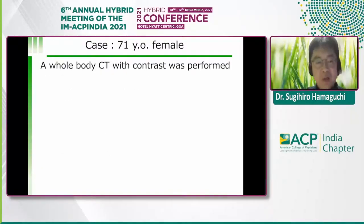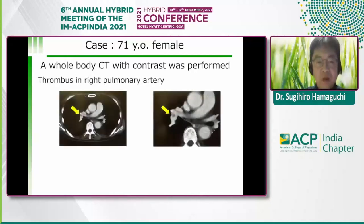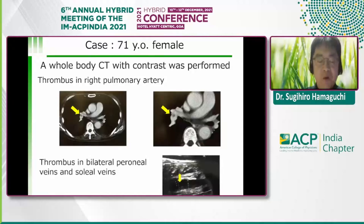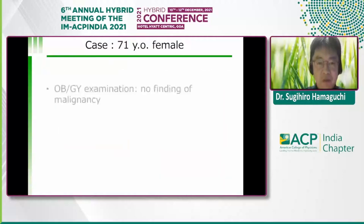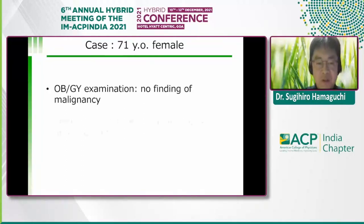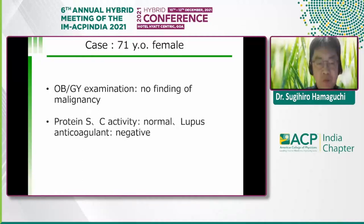We performed a whole-body CT with contrast material and found a thrombus in the right pulmonary artery. We also checked lower extremity veins and found thrombus in bilateral peroneal veins and soleal veins. Concerned that the patient might have cancer elsewhere, we consulted OB/GYN, but they found no malignancy in the uterus or ovaries. There were no hypercoagulable causes such as reduced protein S or C activity, and no lupus anticoagulant.